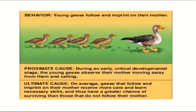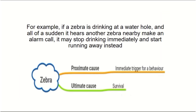Those geese that follow their mother have a greater chance of surviving than those that do not. So the ultimate cause is that following the mother increases survival chances. For a second example, consider a zebra drinking at a water hole that suddenly hears another zebra nearby making an alarm call.